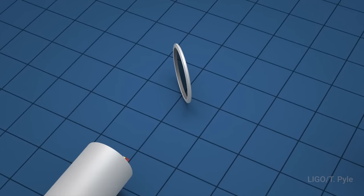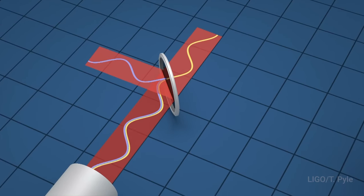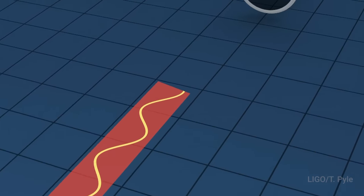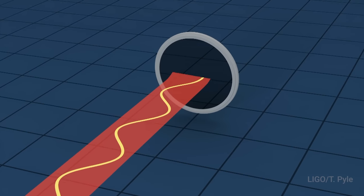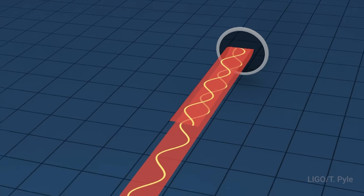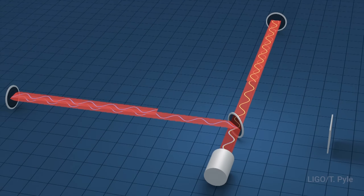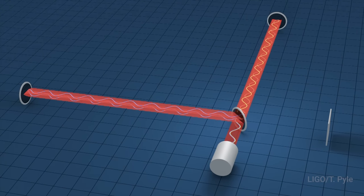Basically, a laser beam could go through a beam splitter and then down two 4 kilometer long tubes. At the end of each of these tubes would be a mirror that sends the beam back, where it would be recombined by the beam splitter and then measured.